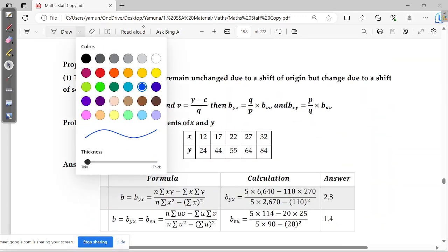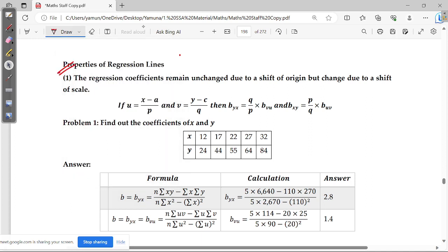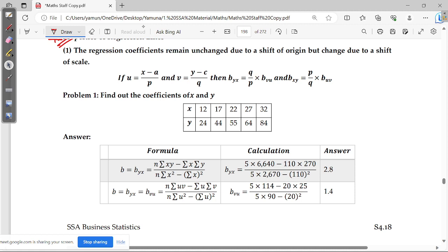Properties, it's quite an important heading here. Properties of regression lines. The first case is with respect to change of scale and origin. The regression coefficients remain unchanged, which is not affected due to a change of origin, shift of origin, but changes due to the shift of scaling.